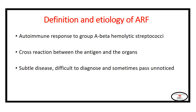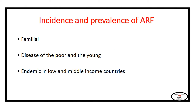Acute rheumatic fever is characterized by being a subtle disease, difficult to diagnose. It runs in families and may affect more than one member of the same family. It usually affects the poor and young individuals. The highest incidence is in school children between age 5 and 14, and in patients living in crowded areas with poor healthcare services. That is why it is endemic in low- and middle-income countries, and the incidence is very low in North America and Europe.